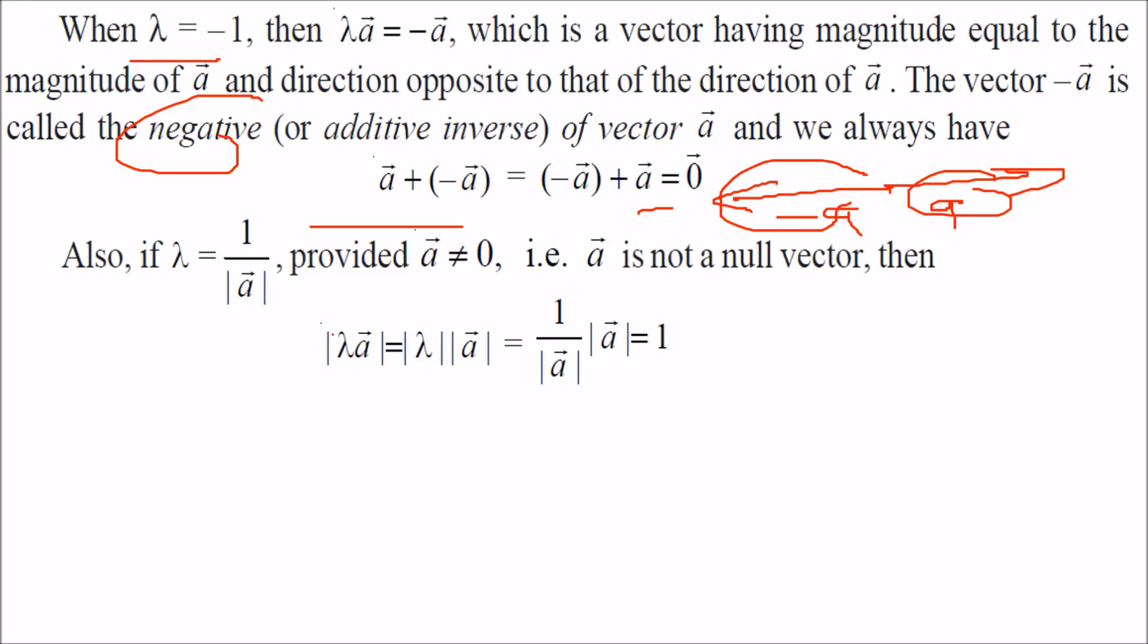We also have one more thing: if you have this vector a and you multiply some vector so that you get 1—this is the magnitude—so this one is the additive inverse and this is the multiplicative inverse. This is multiplicative inverse for this and this is multiplicative inverse for this because when we multiply both of these we get 1.